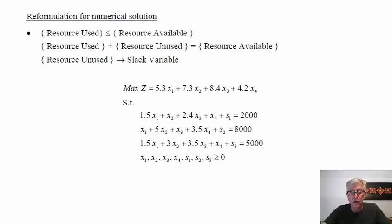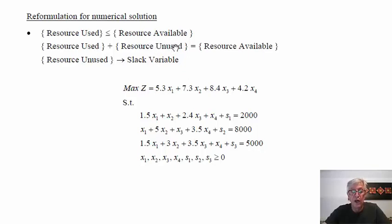The numerical technique — to be presented in the next lecture — requires that the restrictions be transformed into equalities. We do this by restating the meaning: the resources used and those unused together equal the resources available. The unused resources are the slack variables. We add slack variable S1 to the first restriction, S2 to the second, and S3 to the third. These slack variables represent quantities, so they must also be greater than or equal to zero.